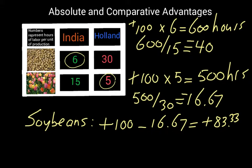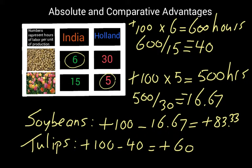Looking at overall soybean production in the world: India increased its soybean production by 100, Holland cut back by 16 and two-thirds bushels, so the total gain is 83.33. Tulip production has gone up by 60 — Holland increased its tulip production by 100, India cut back by 40, so 100 minus 40 equals 60. So now the two countries can trade. If India sold its additional soybeans to Holland and Holland sold tulips to India, they would each end up — if they split the difference — with more than 40 bushels of soybeans and 30 cases of tulips. Specialization, making products you're best at, helps overall total world production and both countries would be better off.